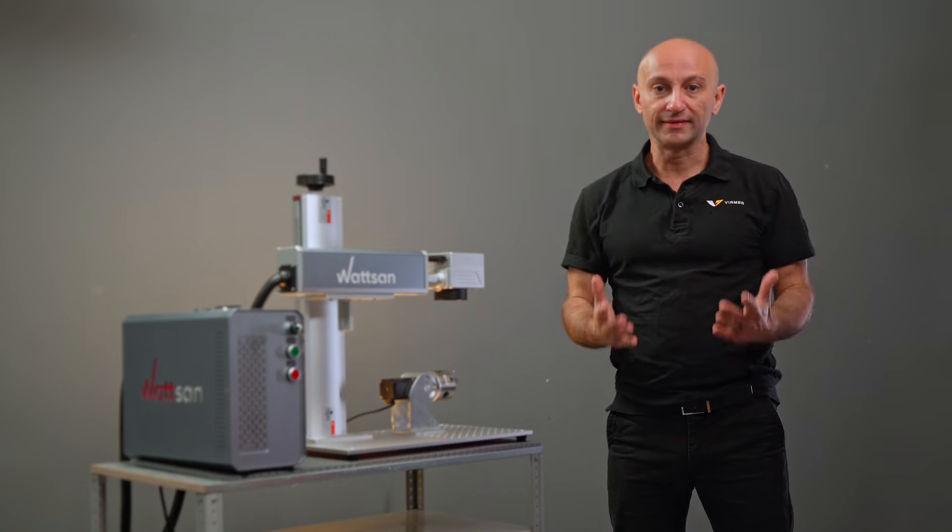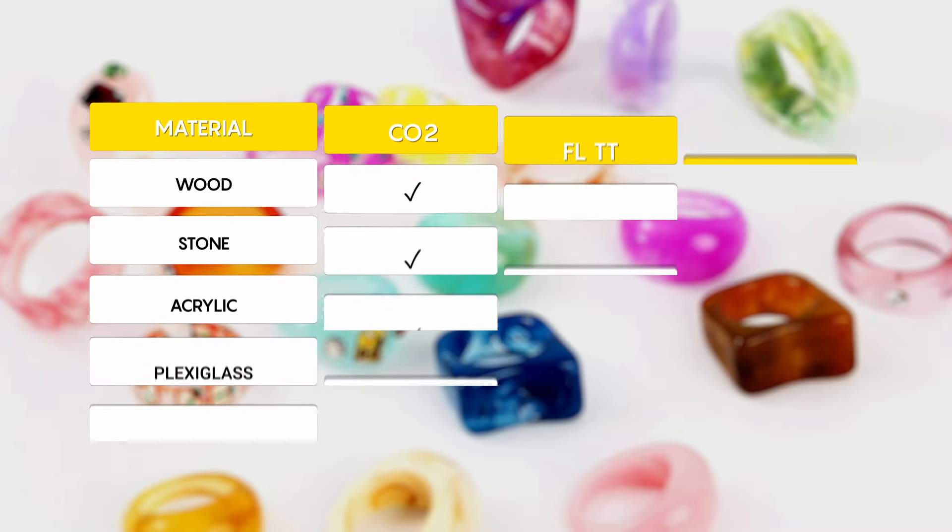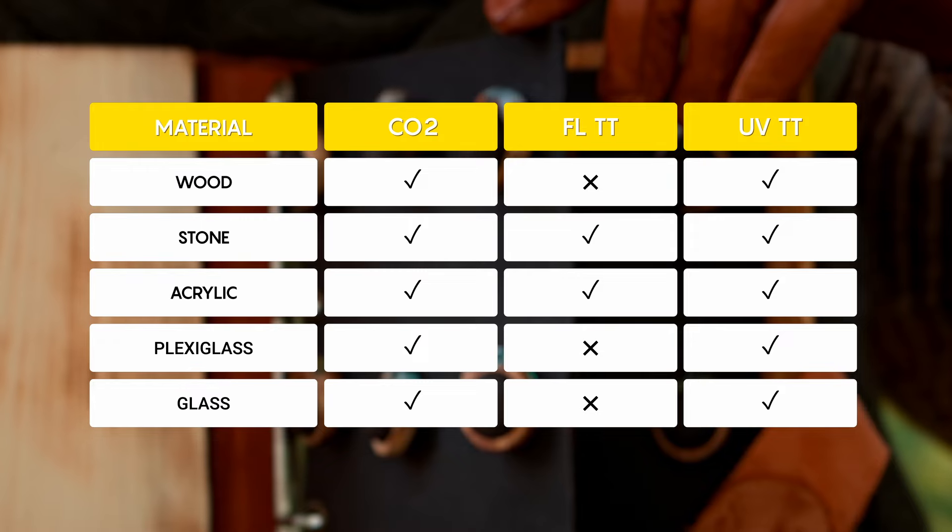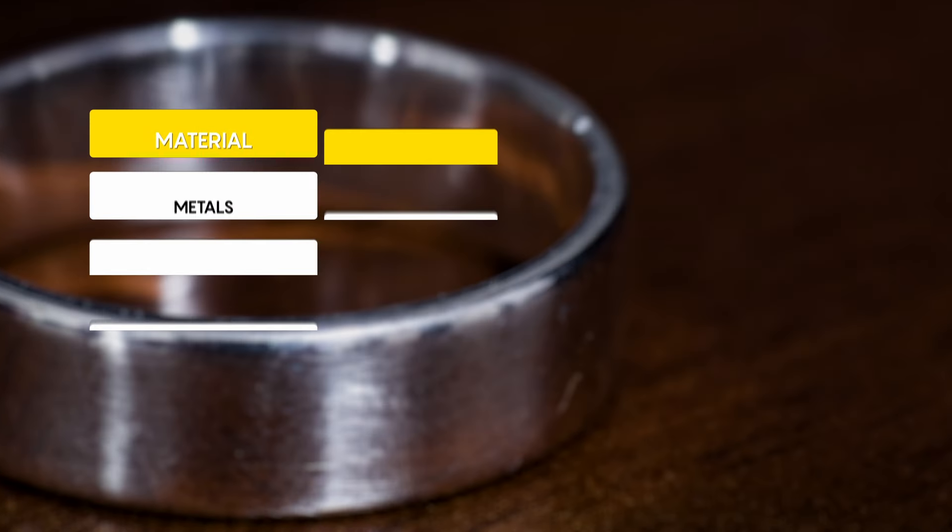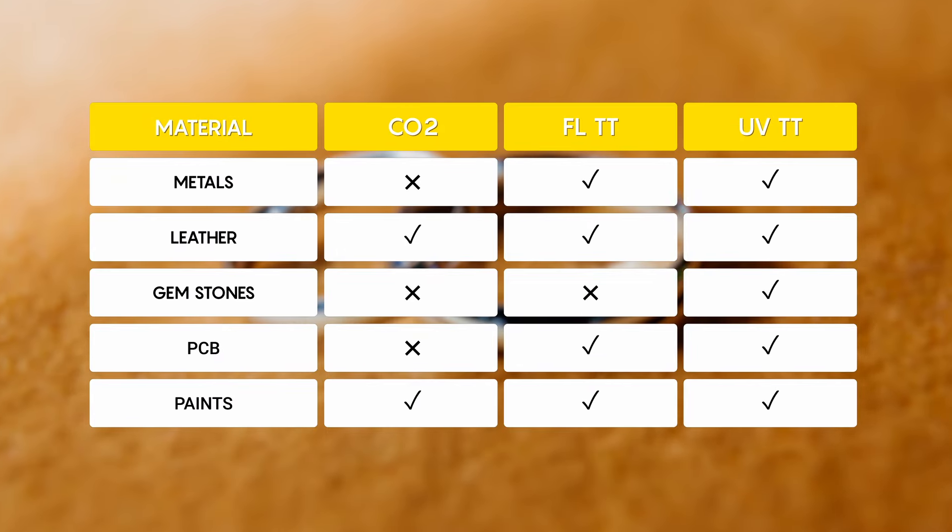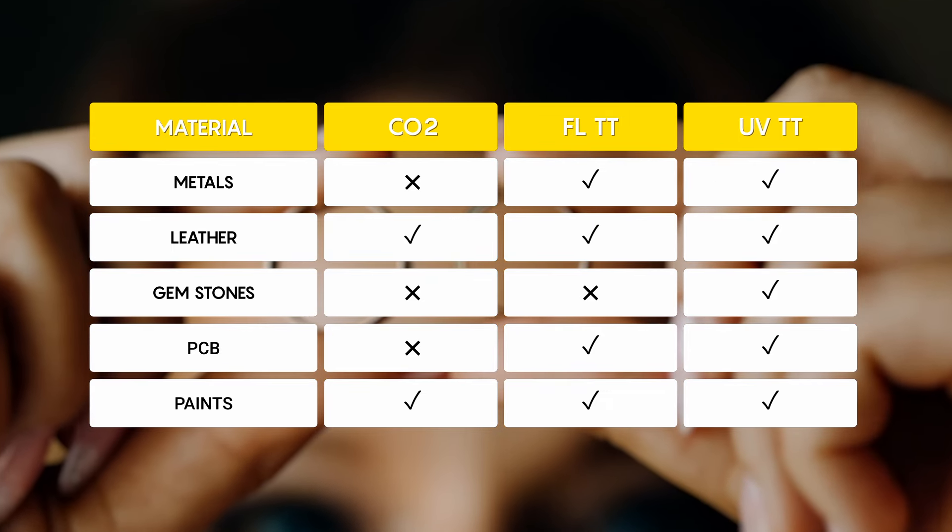With CO2, for example, you can engrave wooden or acrylic rings, fashion jewelry in short. On fiber you can engrave metal. On ultraviolet you can engrave silver and gold, which are very difficult to process with other types of markers.